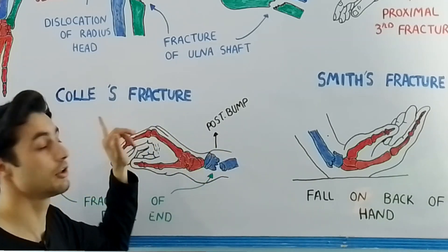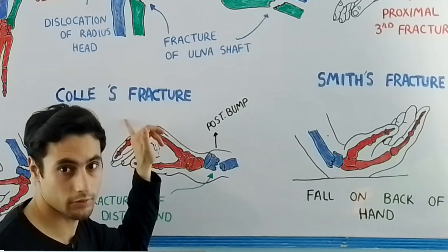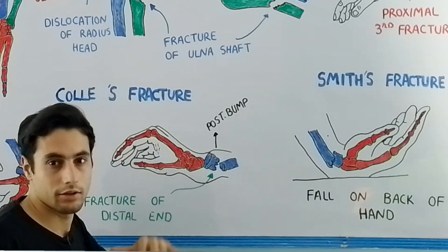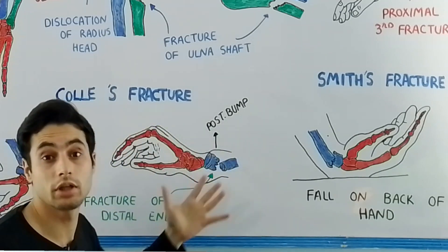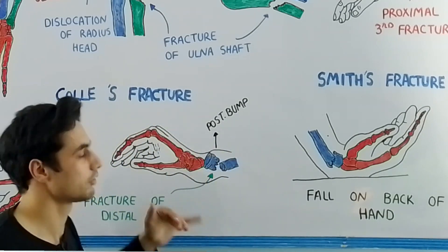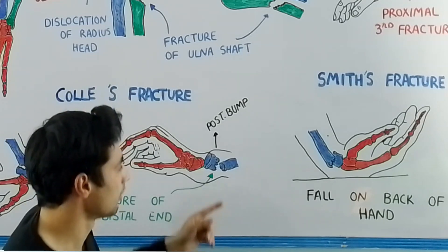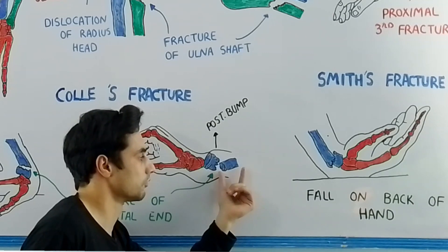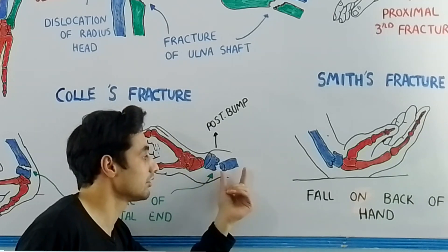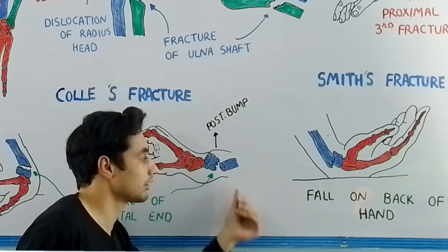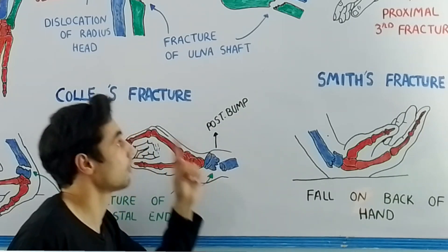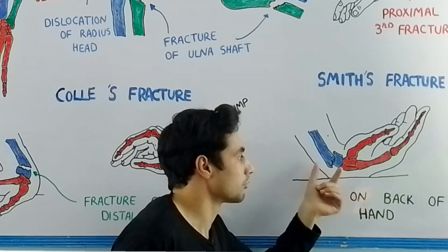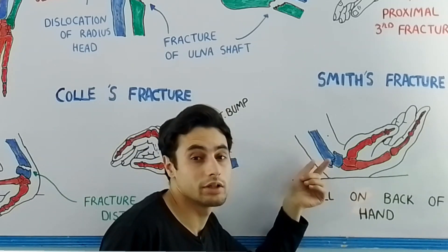Have a look at this diagram — there is a posterior bump in the Colles' fracture. The Colles' fracture is also known as the dinner fork deformity, as it is very similar to the kitchen utensil fork. The fracture is at the distal end and has two fragments: the distal fragment and the proximal fragment. The distal fragment is directed dorsally in the case of Colles' fracture.